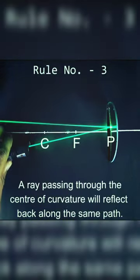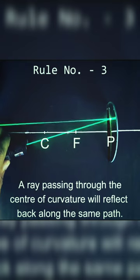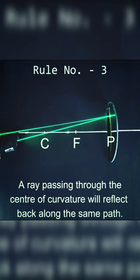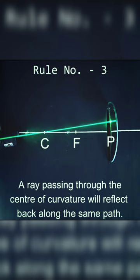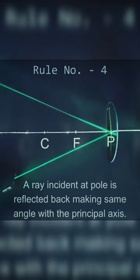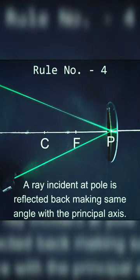Rule number three: a ray passing through the center of curvature will reflect back along the same path. Rule number four: a ray incident at the pole is reflected back making the same angle with the principal axis.